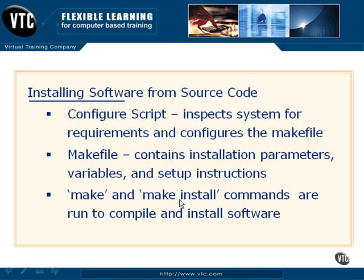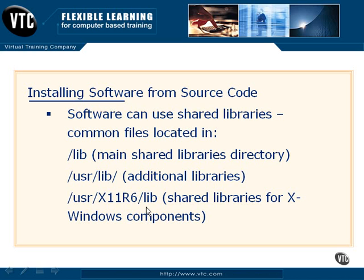When we install software from source code, we're also going to rely on some form of shared library. A shared library is a folder or location in which resources are shared between software components — two different software components might use the same file or reference the same settings. Those shared libraries will be located in a couple of different places: it's always going to be in a lib directory, which can be a primary lib directory in the root of the file system. You can also have user-specific and XWindows-specific libraries as well.